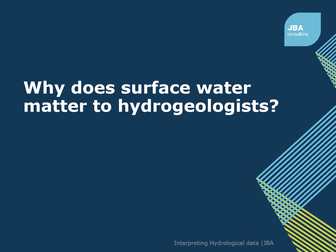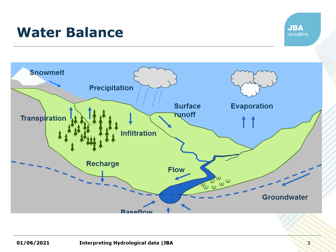So the first thing we want to remind ourselves is why does surface water matter to hydrogeologists? I'm sure you've all seen many variations of this water balance type figure. The basic reason is because surface water and groundwater are connected. It's easy to forget about that as we focus on our own area of interest. But groundwater is gaining water from the catchment by recharge and is also delivering it back into rivers by base flow.